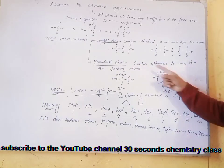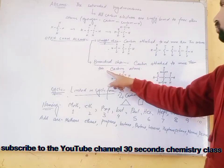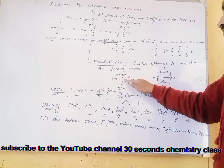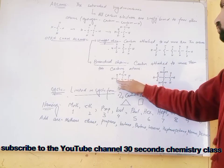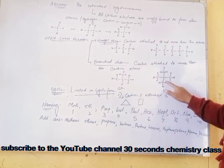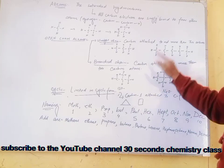Branched chain. Carbon attached to more than two carbon atoms. Look at this carbon. This carbon is attached to one, two, and three carbons. This one is attached to four carbons.